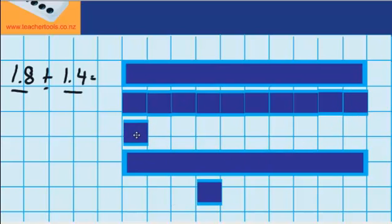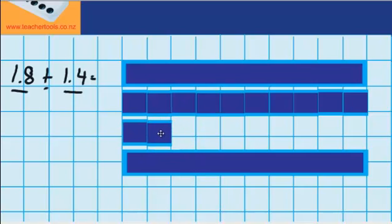I'm going to move these other tenths up there as well. Now it's easy to see that I have one whole chocolate bar here, two whole chocolate bars here because of all the tenths that I put together — all the ten tenths — three whole chocolate bars there, and then I've got these two tenths. So that's three wholes and two tenths.